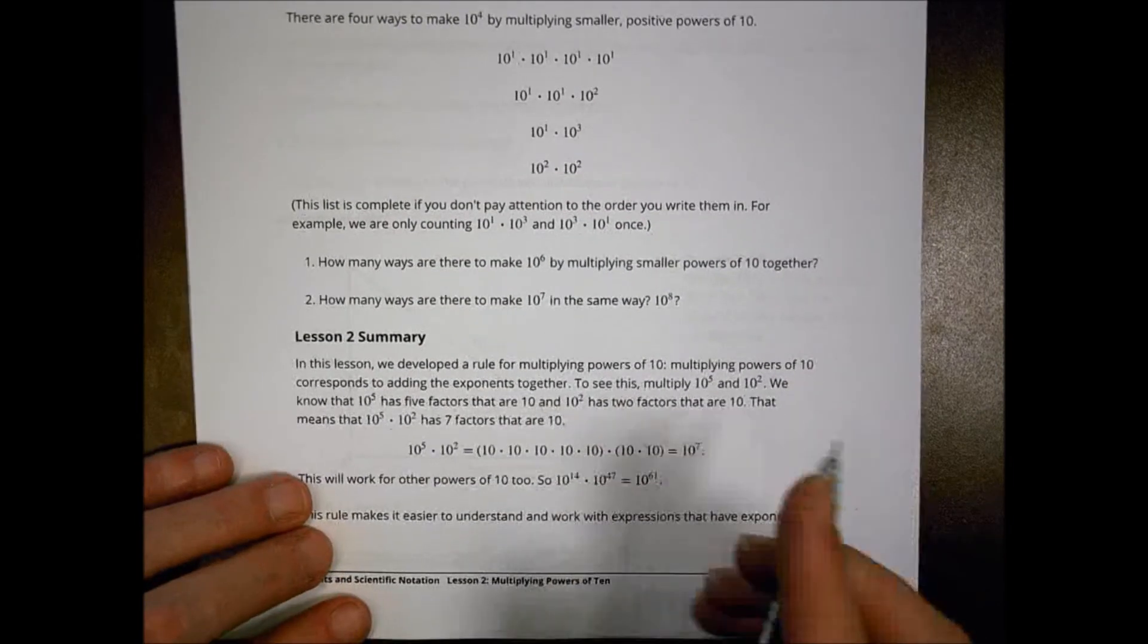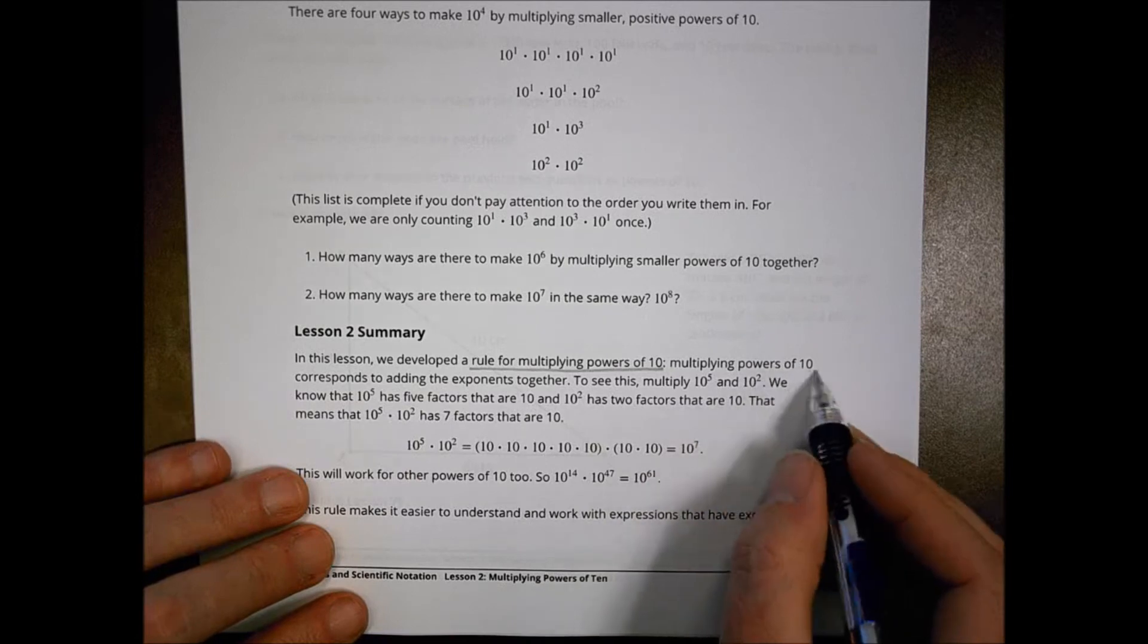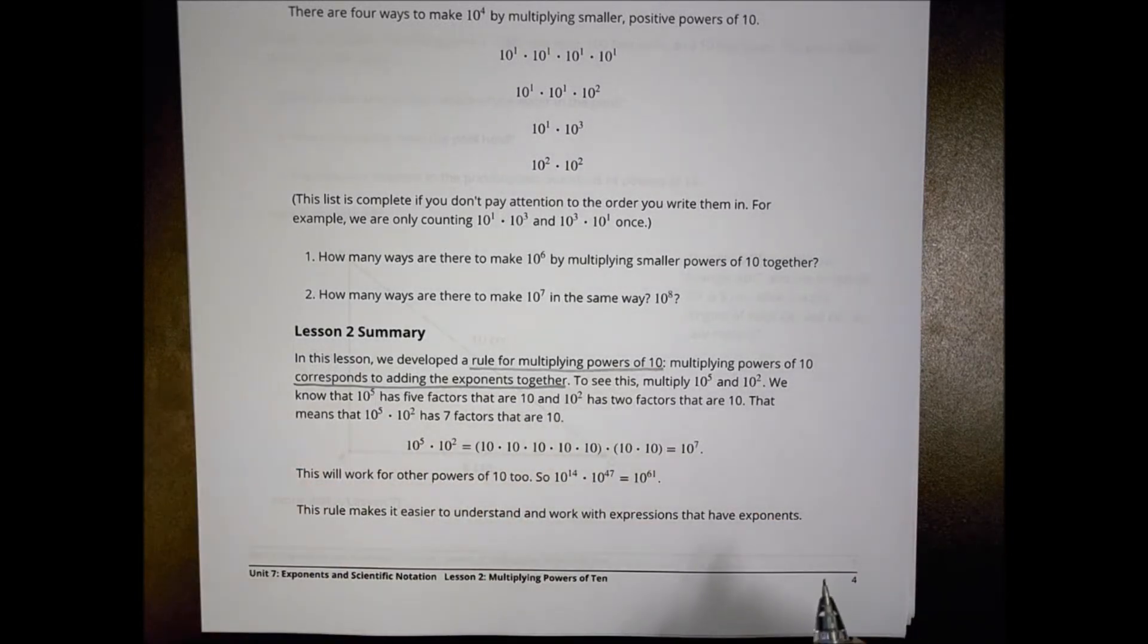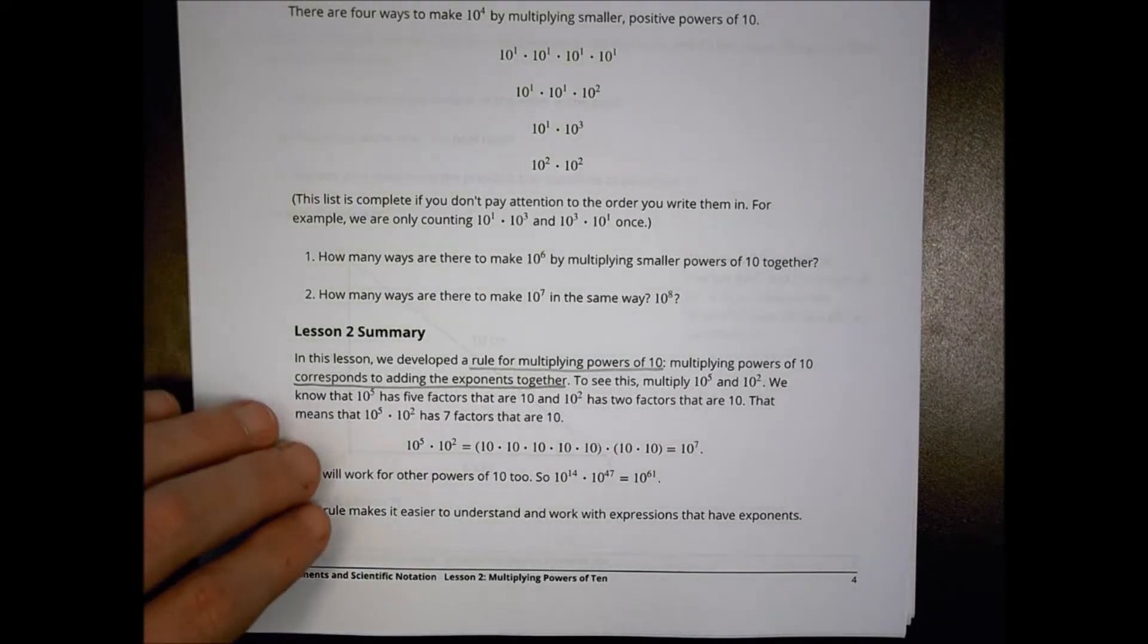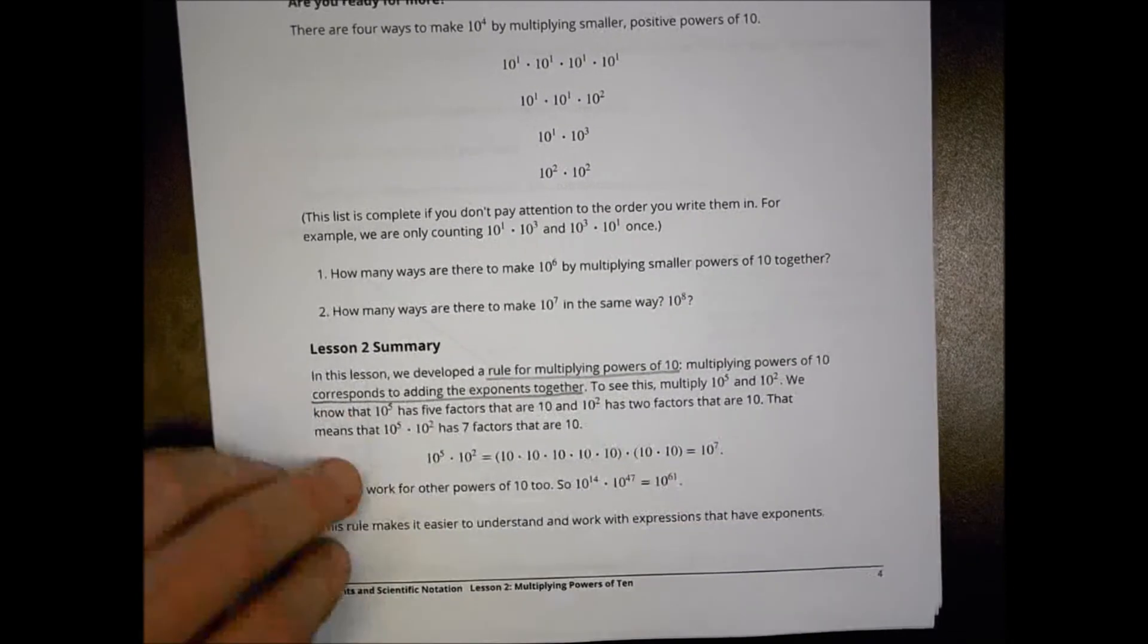So in this lesson, what we developed basically is a rule for multiplying powers of 10. Multiplying powers of 10 corresponds to adding the exponents together. And that was really the idea there and what we were doing. So take a moment then to work on your homework. Pause the video and then you can come back and we can check that together.